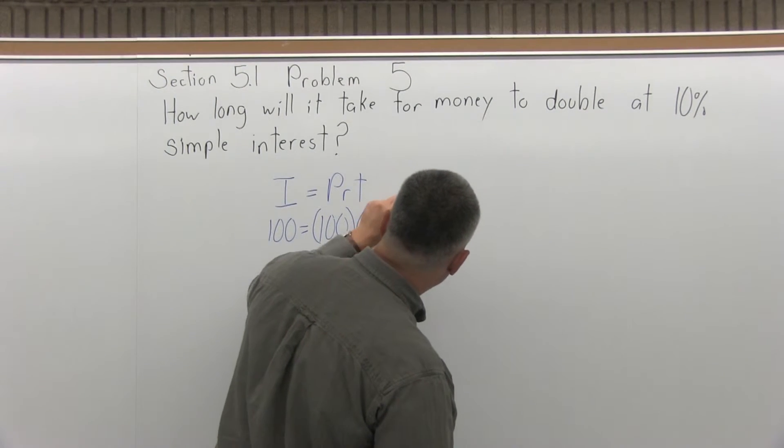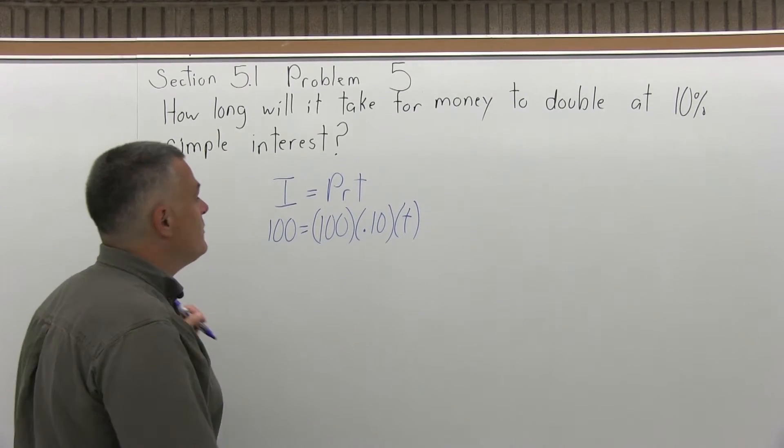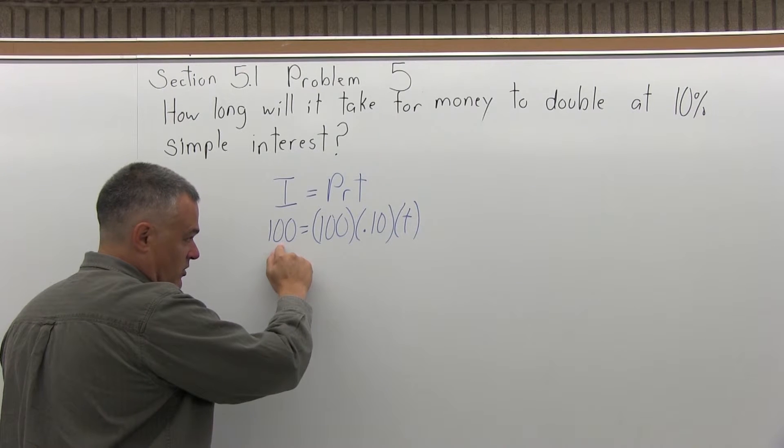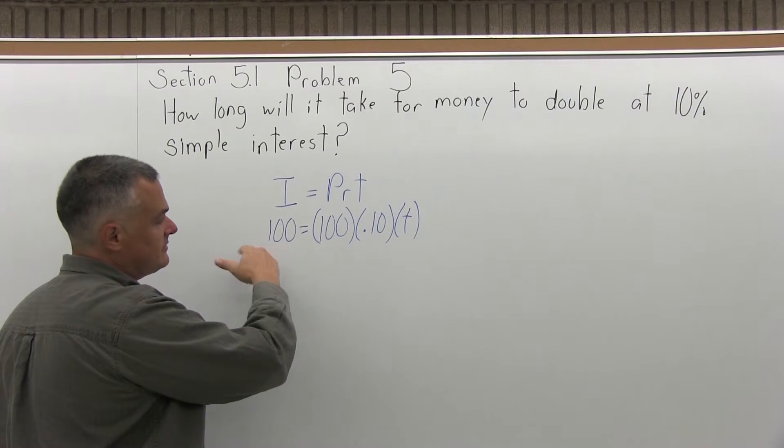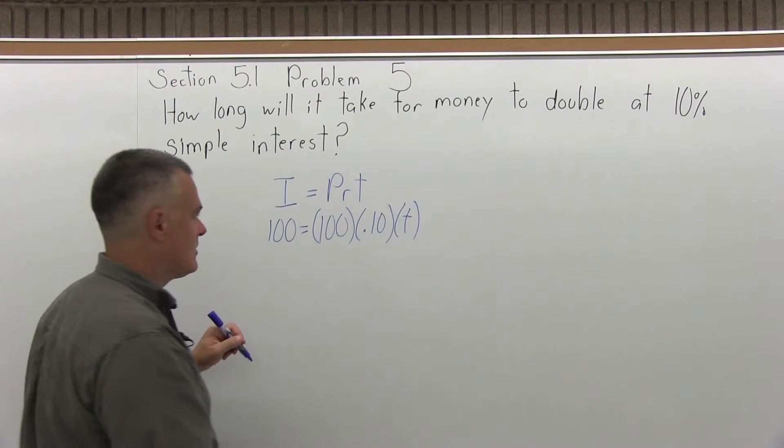And the T, the time, is the unknown, and it'll be time in years. So now, $100 of principle will double if it earns $100 of interest. And again, you can start with a different amount of principle, but this is a nice amount because it makes it easy to work with.